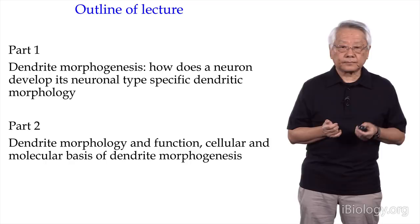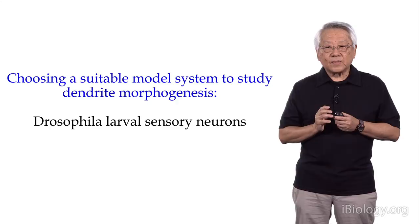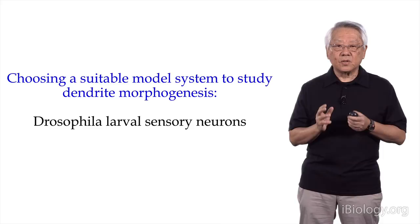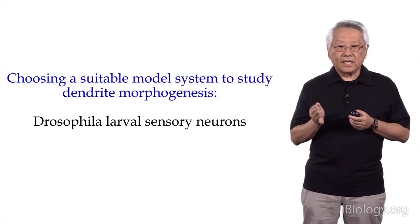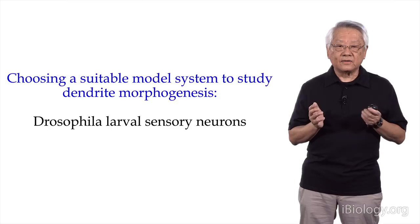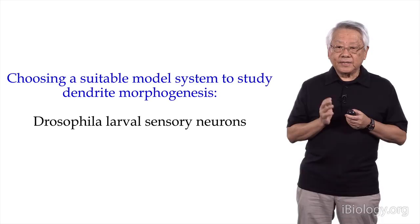How does one study a daunting problem like dendrite morphogenesis? We took the tried-and-true approach of choosing a relatively simple model system suited for the problem — the group of Drosophila larval sensory neurons. Drosophila has a very good track record as a model system for studying a variety of fundamental biological problems, partly because of the great genetic tools developed by the fly community over the years.